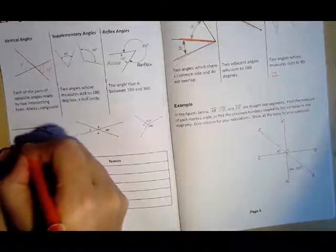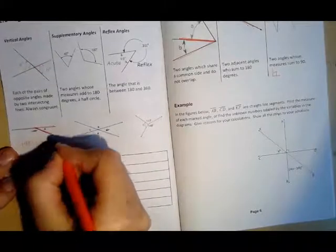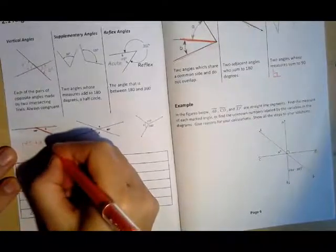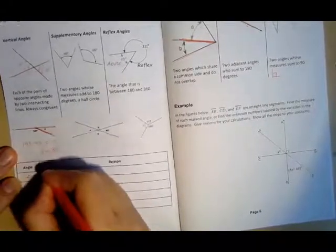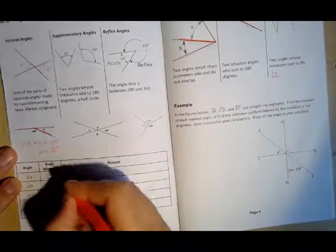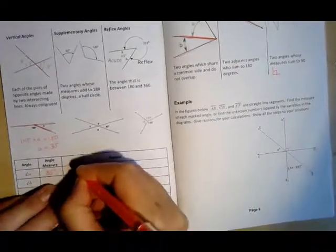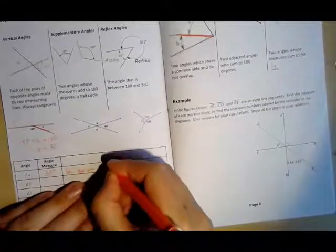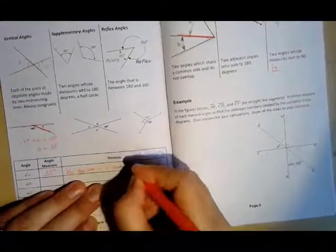So 145 plus A has to equal 180. So A has to be equal to, let's see, 35 degrees. Because they form a linear pair. Why the answer is correct is just as important as what the answer actually is.